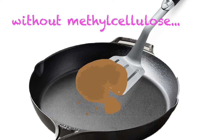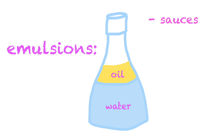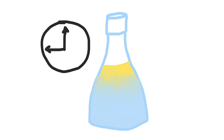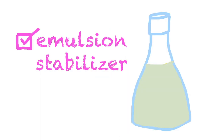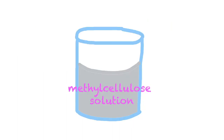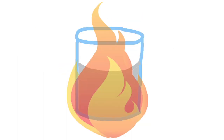Continuing with the theme of viscosity and stickiness, methyl cellulose is used in your plant-based burger to bind and hold together the other ingredients for better texture. It is also used in emulsions like sauces and salad dressings. Emulsions are a mixture of two substances that separate if left to sit, and methyl cellulose stabilizes emulsions so that they separate slower.